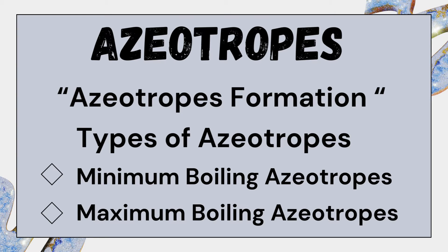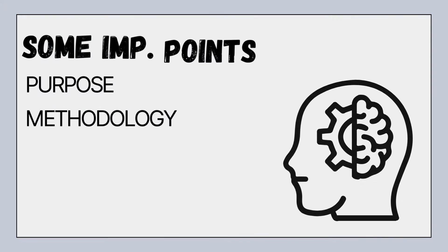In a maximum boiling azeotrope, the mixture boils at a temperature higher than that of its individual components. An example of a maximum boiling azeotrope is the hydrochloric acid-water azeotrope.